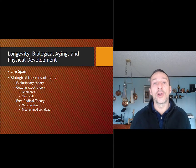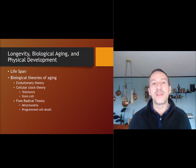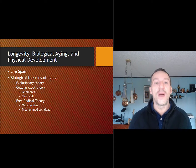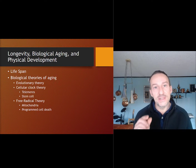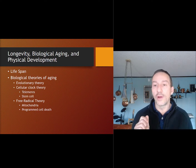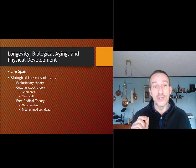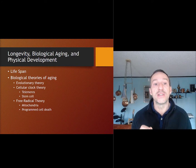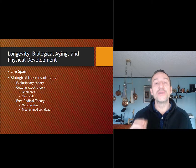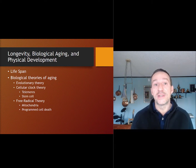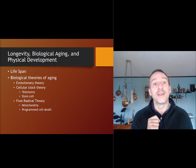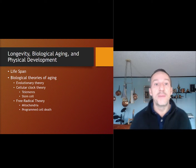Another theory is cellular clock theory — the idea that cells can divide a maximum of 75 to 80 times, then the cells can no longer divide, and then you die. Why these cells die might be because the tips of their chromosomes, called telomeres, become shorter and shorter. After about 80 replications, these tips are drastically reduced and the cell can no longer divide. Healthy people in their 100s have longer telomere length compared to unhealthy people in their 100s.